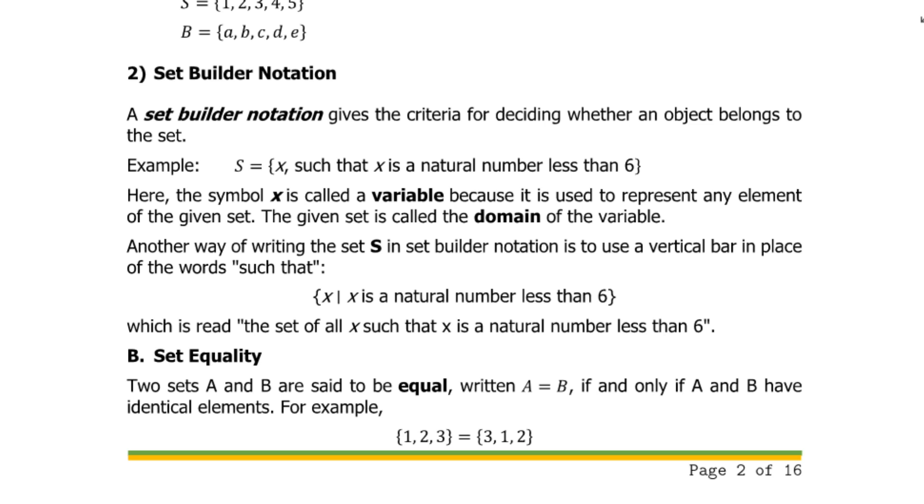Another way of writing the set S in set builder notation is to use a vertical bar in place of the words 'such that.' Let us look at this example. Our example above is the same with this one. The only difference is the word 'such that' is now written as a vertical bar. So we can actually rewrite 'such that' with a vertical bar. In this particular example, this is written in set builder notation. The vertical bar is written as 'such that,' so for the whole set we read this as S equals x such that x is a natural number less than six.